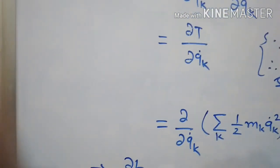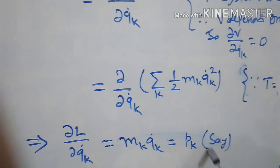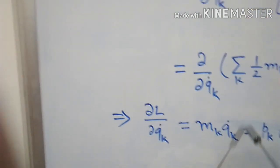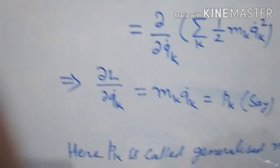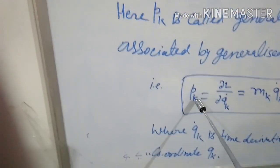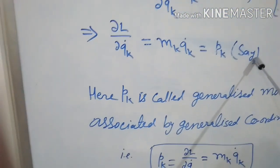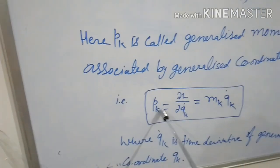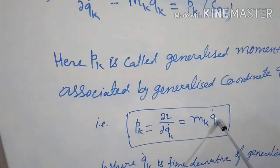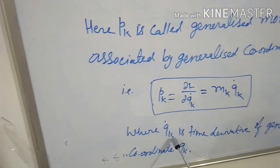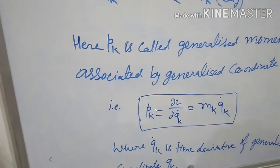We define this term as PK, and this PK is the generalized momentum associated with the generalized coordinate QK. So generalized momentum PK is formulated as PK equal to del L upon del QK dot equal to Mk QK dot, where QK dot is the time derivative of generalized coordinate QK.